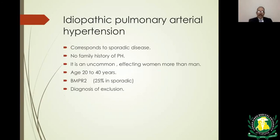Idiopathic pulmonary hypertension, also known as primary pulmonary hypertension, has two types. Idiopathic means no cause is found and no family history. It is more common in females aged 20 to 40, BMPR2 is positive in about 25 percent of cases, and diagnosis is made by exclusion.